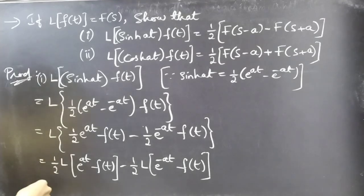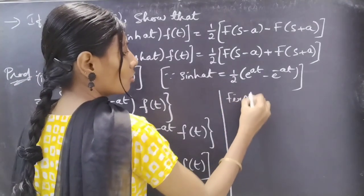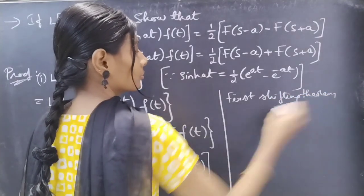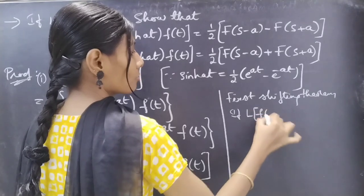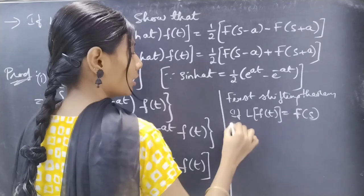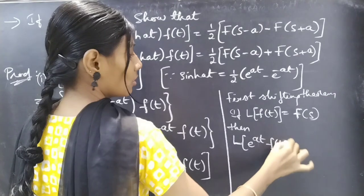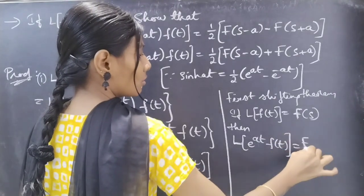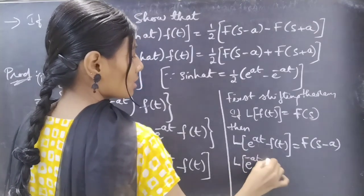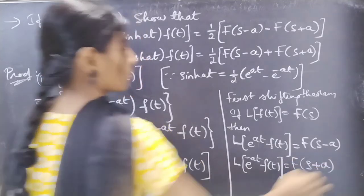We know from the first shifting theorem that if L{f(t)} = F(s), then L{e^(at)f(t)} = F(s-a), and L{e^(-at)f(t)} = F(s+a).